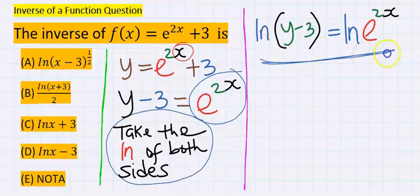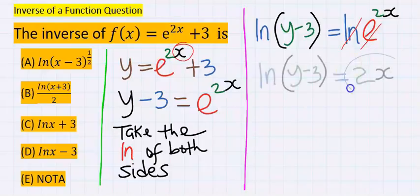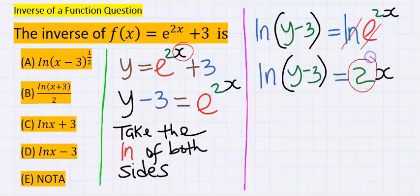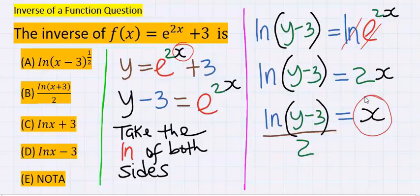As you can see here, next, natural log will eliminate exponential. Now 2x is free. Next, take 2 across and it's going to divide everything here. As you can see, x is now isolated.